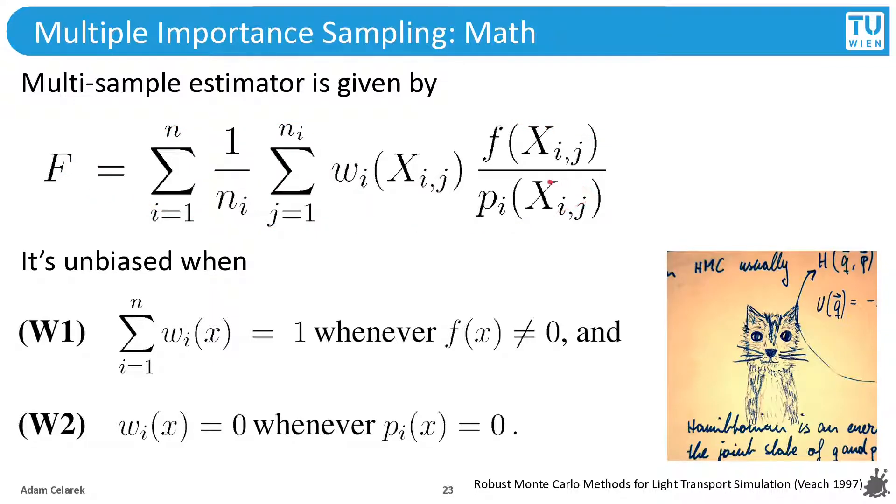Okay, and here we see the multi-sample estimator taken directly from Eric Veach's PhD thesis. You can read it up. And the expectation of this estimator is again our integral that we want to compute. And those are the conditions. The first one we saw before.